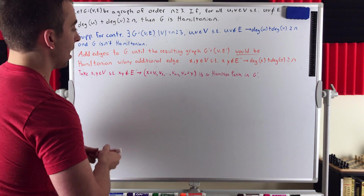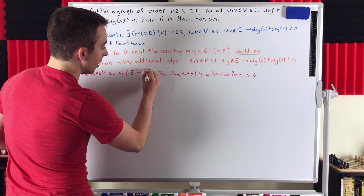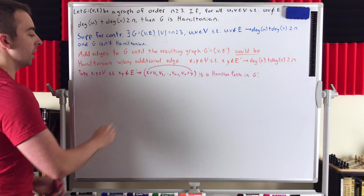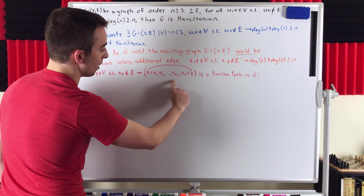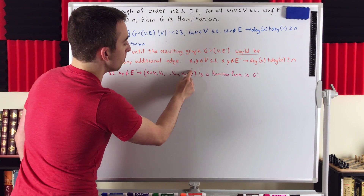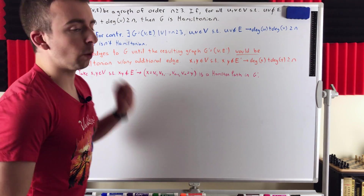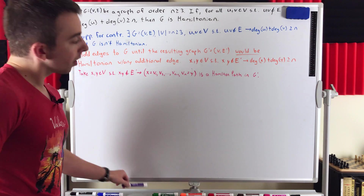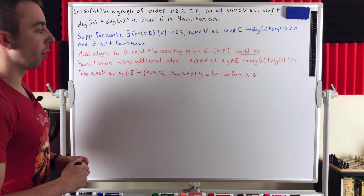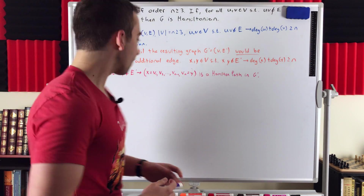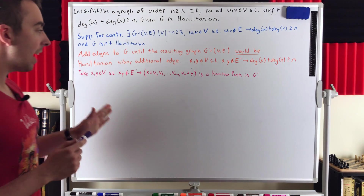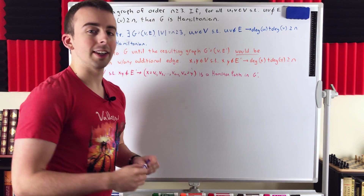Just to mention again: if we joined X and Y with an edge, that would create a Hamiltonian cycle — that's how we know this path has to exist. Clearly, if no Hamiltonian path from X to Y existed, joining X and Y with an edge would not create a Hamiltonian cycle. But we know it does, because adding any edge to G prime will create a Hamiltonian cycle. So now, if we want to contradict the condition that the sum of degrees of any non-adjacent vertices in G prime is at least N, we want to find a way to restrict the degree of X and/or Y.